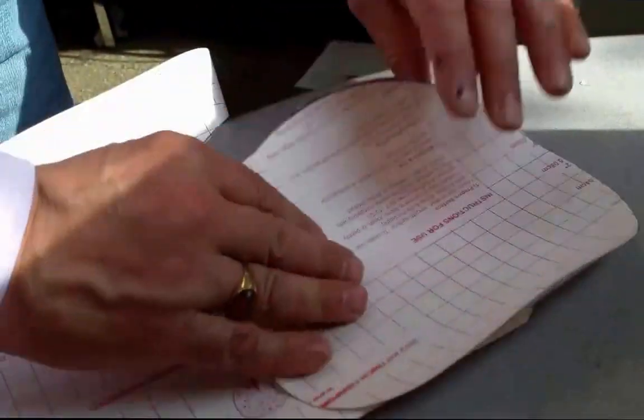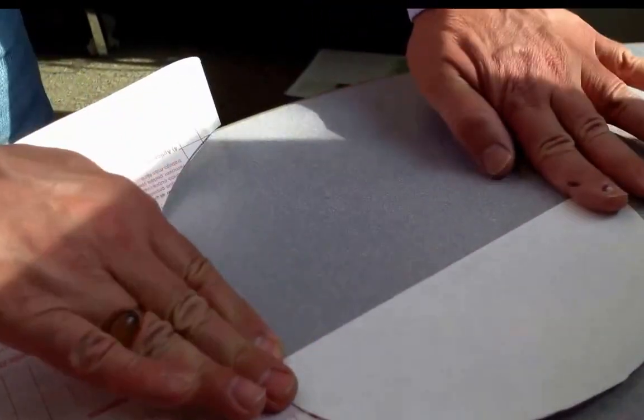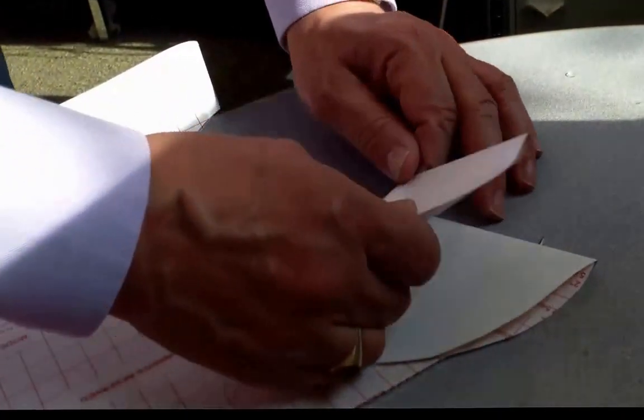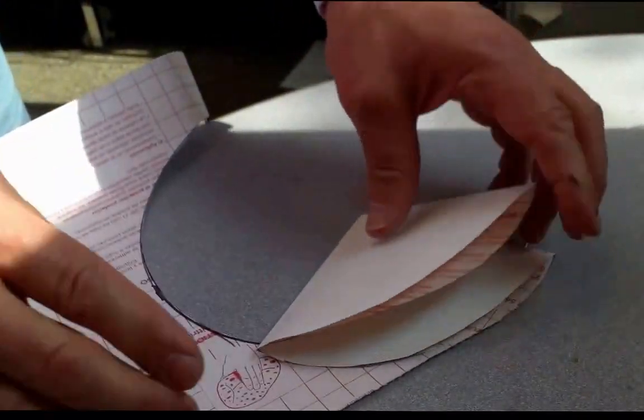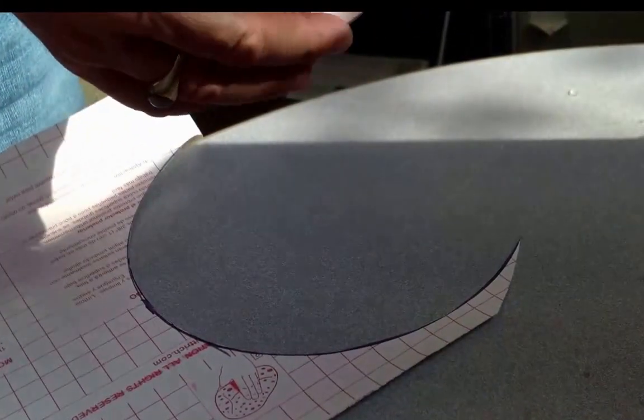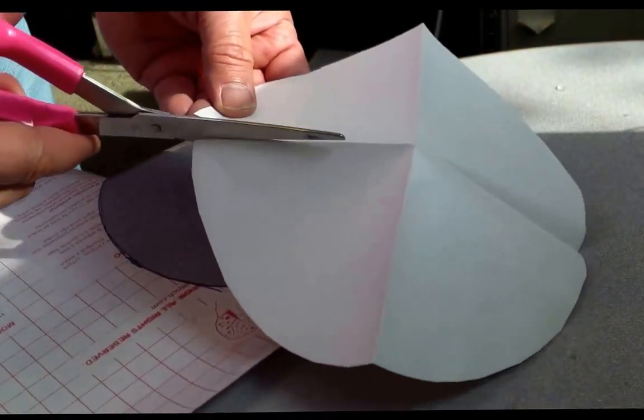Now what we need to do is fold this in half and in half again, and that will tell us where our four quadrants are, like that, and then you simply want to slice out two of them, and basically cut down these lines.